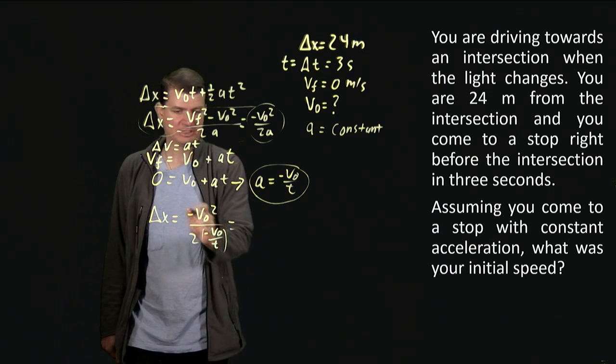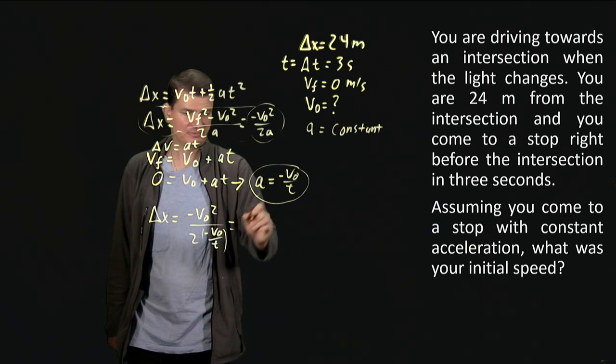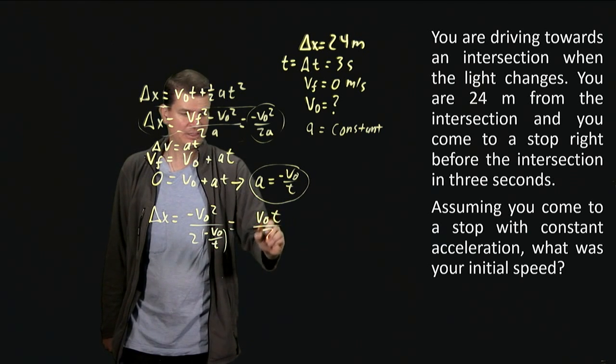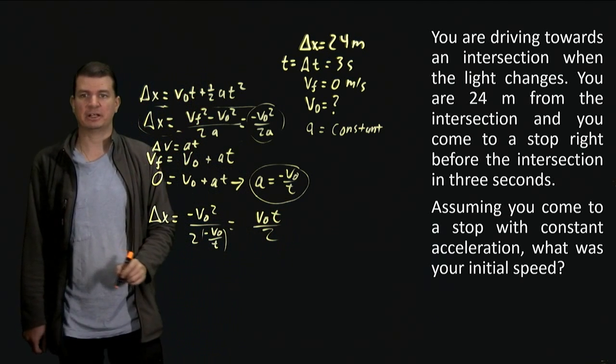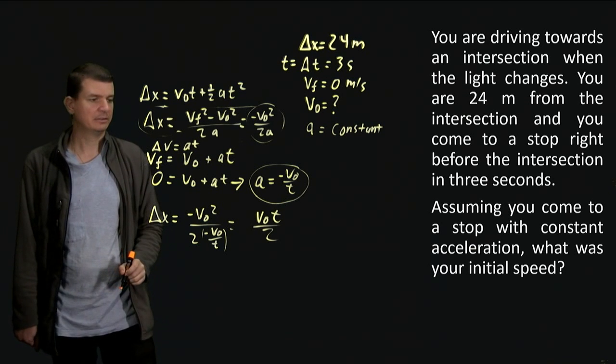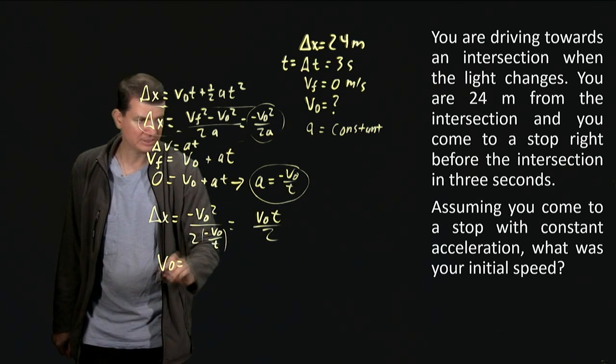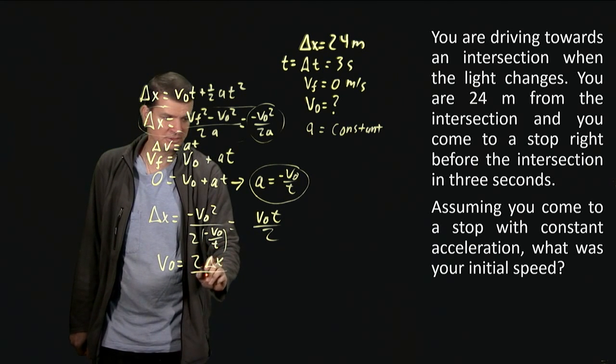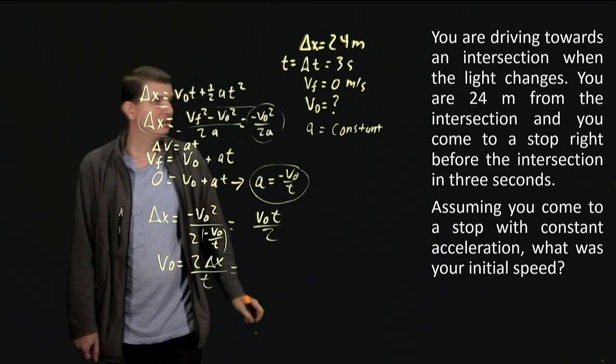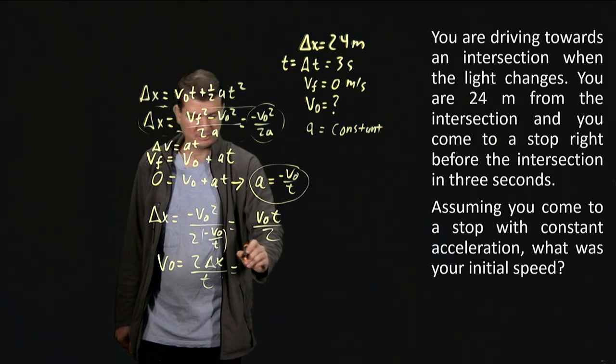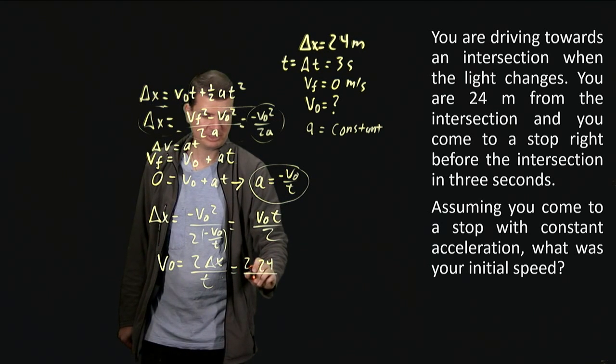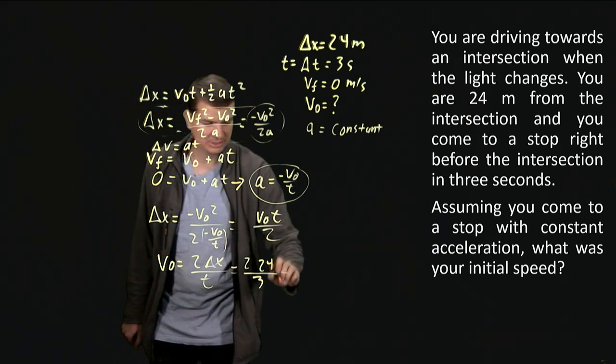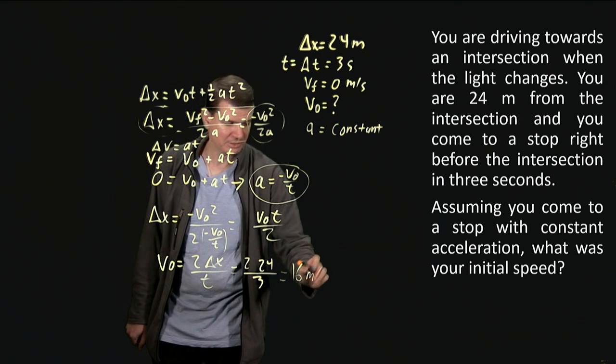So the minus signs cancel, one factor of v zero cancels, the t comes up to the top and I've got a two, so it's one half of v zero times t. Which means that v zero is two delta x over t, which is two times twenty four divided by three. Twenty four divided by three is eight, times two is sixteen meters per second.